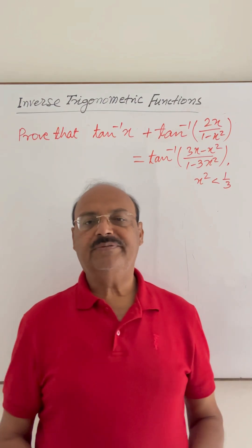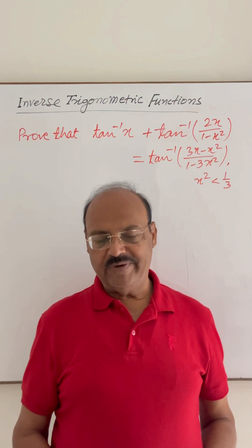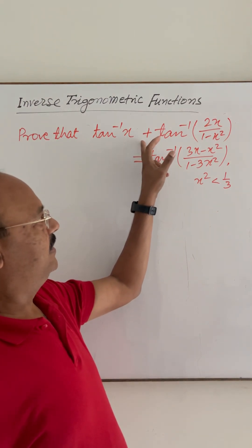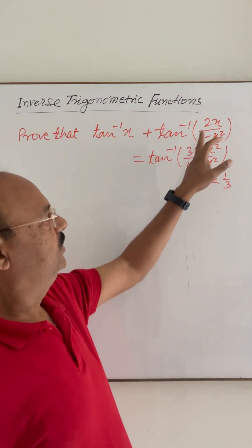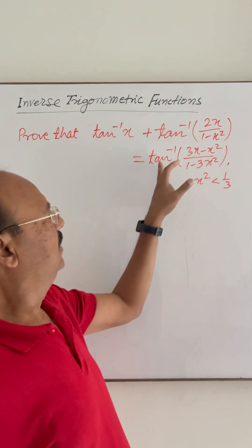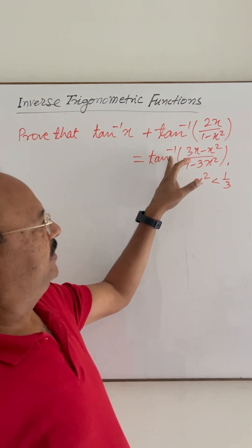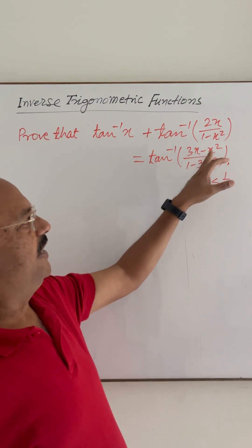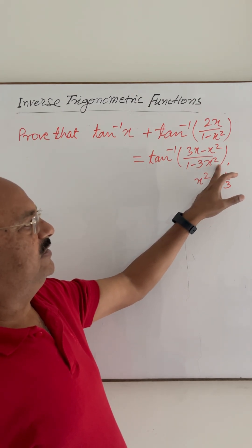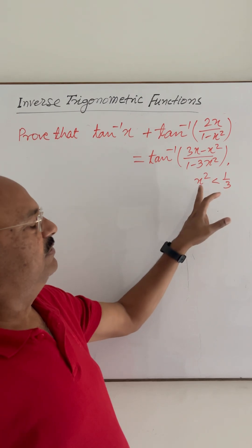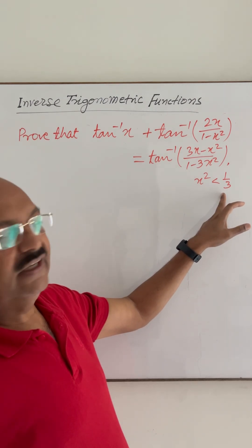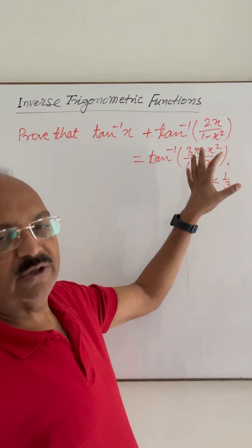In this question of inverse trigonometric functions, we have to prove that tan inverse x plus tan inverse of 2x upon 1 minus x square is equal to tan inverse of 3x minus x cube upon 1 minus 3x square. The condition given is that x square should be less than 3, otherwise these functions will not be defined.